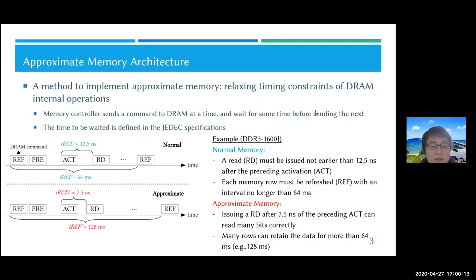At the bottom, the figure shows an example of how DRAM commands can be organized in normal memory versus approximate memory. In normal memory, a read command must be issued no earlier than 12.5 nanoseconds after the preceding activation command, which is called TRCD. In this figure, an ACT and RD are apart by 12.5 nanoseconds.